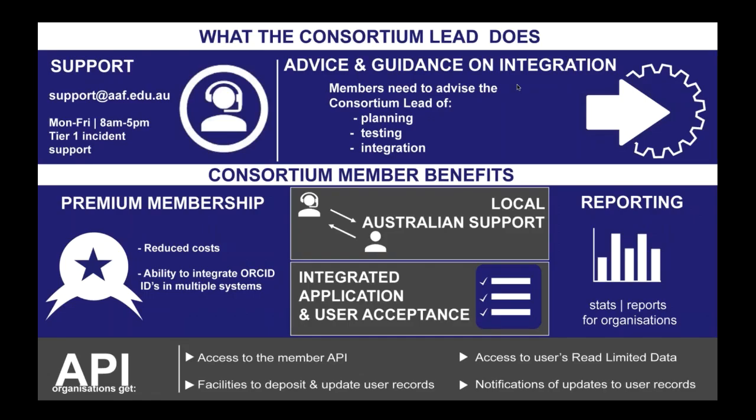We've got knowledge on what member institutions are currently doing with their integration — whether they're planning or testing. If a couple of members are doing something similar, we try to get them to speak to each other and effectively connect the dots. As for why you want to be a consortium member: you get premium membership at a reduced cost, and you have the ability to integrate ORCID into multiple systems.